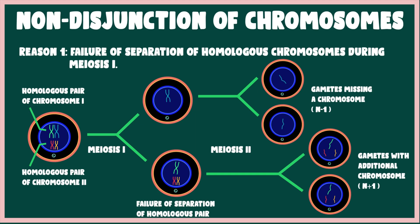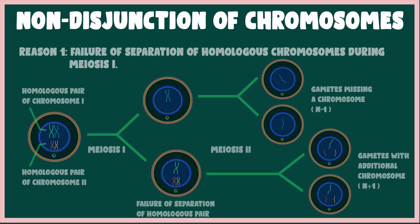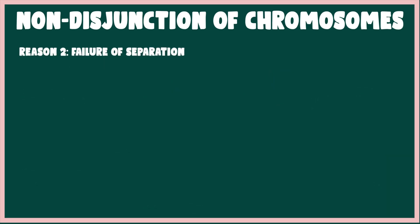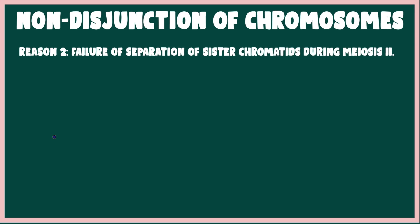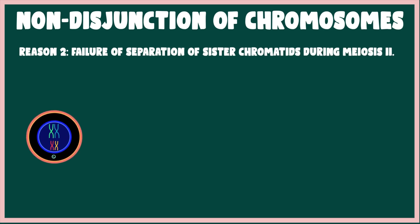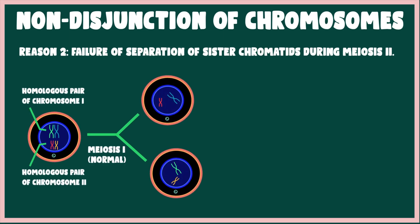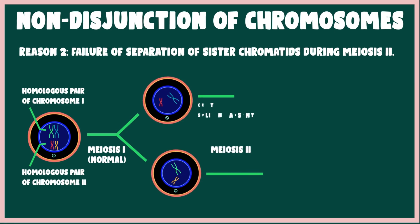In the second case, meiosis 1 occurs normally but the centromere fails to split during the anaphase 2 event of meiosis 2. As a result, out of 4 gametes formed, two gametes are normal, while one gamete has one less chromosome and the other has one extra chromosome.